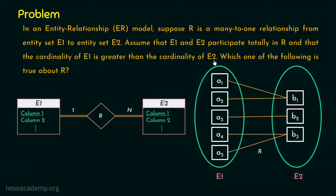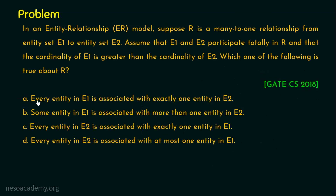One more key information: the cardinality of an entity set in a relationship means the maximum number of relations in which an entity of a given entity type can participate. In this case, E1 can participate with E2 exactly once, but E2 can participate with E1 more than once — N, because of the many-to-one relationship. With this knowledge, let's step into the options. The first option is: every entity in E1 is associated with exactly one entity in E2.